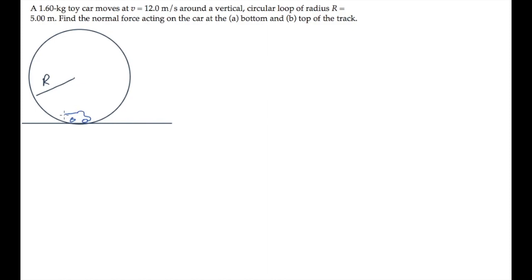The car in this problem is moving around a circular track of radius R at the constant speed v of 12 meters per second. We're asked to find the normal force on the car at the bottom and top of the track.